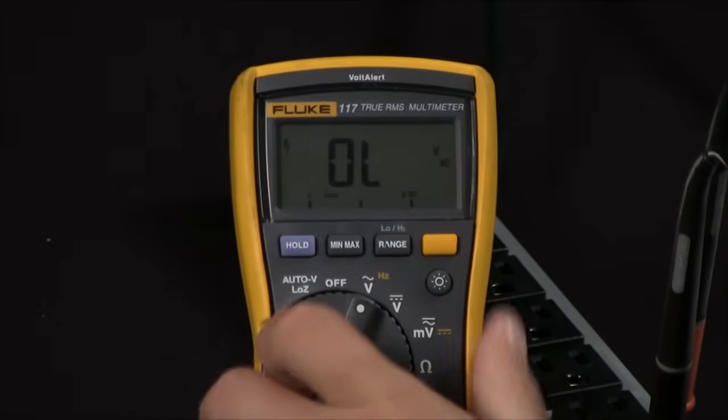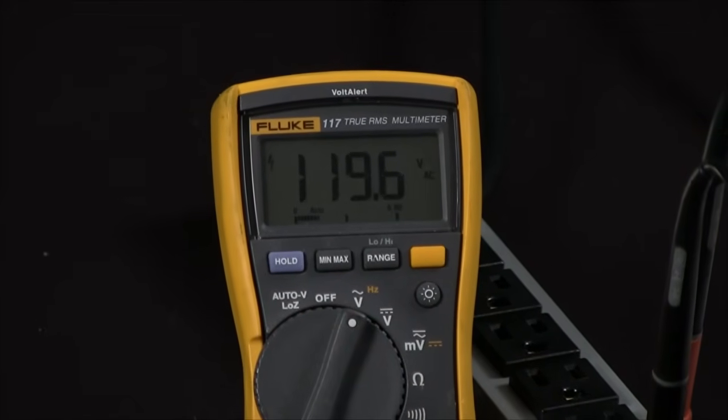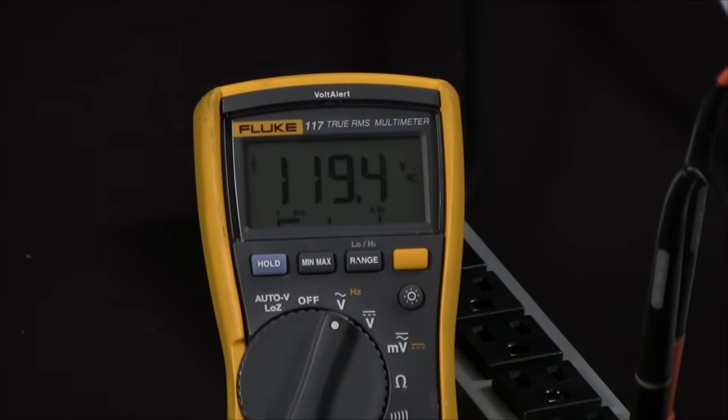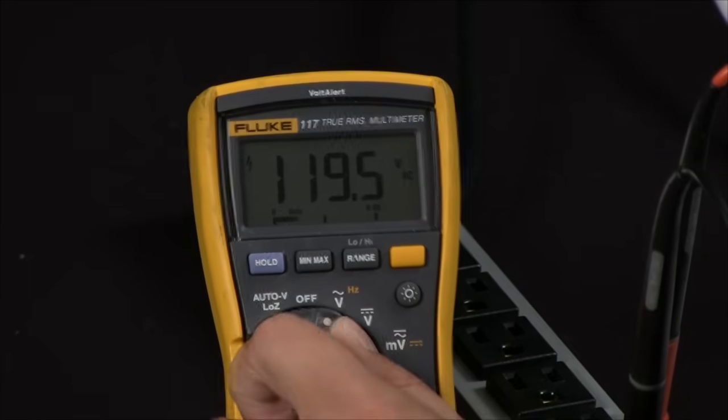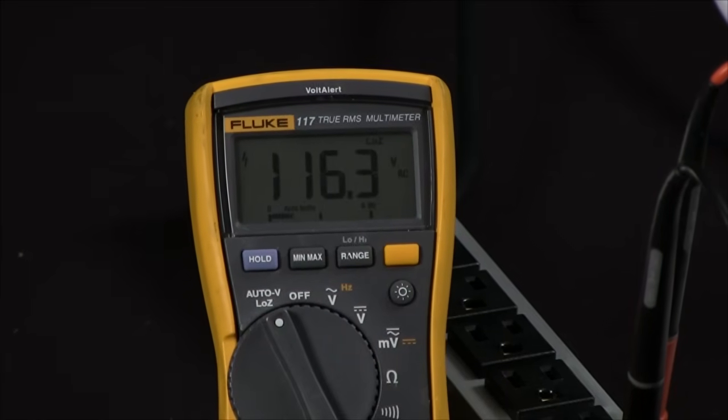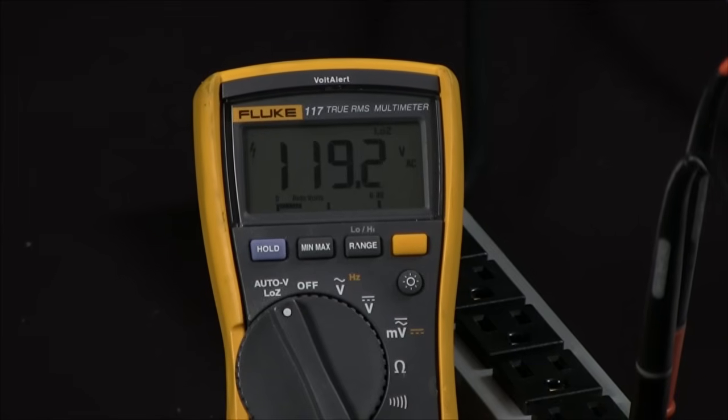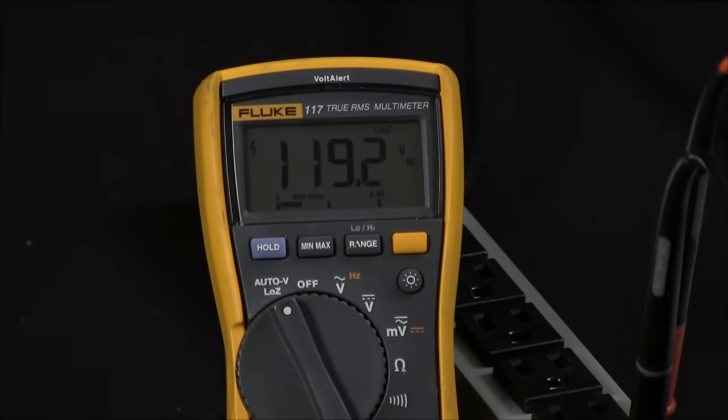We'll turn this to voltage and as you can see we're getting a 120 reading. In our second step we'll turn this to the low impedance setting and you're still going to have a true voltage reading of 120 volts.